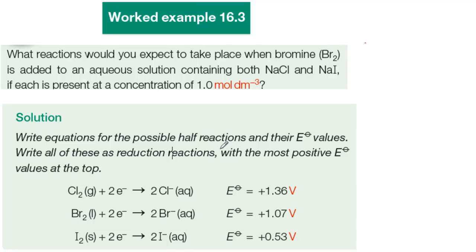One of the most important uses of standard electrode potentials is for predicting the direction of redox reactions. Worked example 16.3 is typical, and you need to be able to make this kind of prediction quickly and confidently.